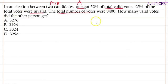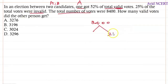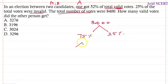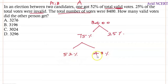Working backwards from 8400 total votes, 25 percent of the votes were invalid, which means only 75 percent of the votes were valid. So A got 52 percent of the total valid votes, and B got 48 percent — because 100 minus 52 equals 48 percent.